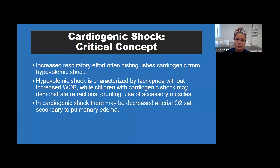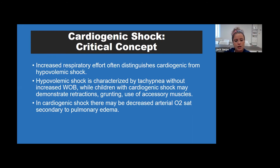A critical concept in cardiogenic shock: increased respiratory effort—retractions, grunting, and accessory muscle use—often distinguishes cardiogenic from hypovolemic shock, which has tachypnea without increased work of breathing. You also need to discern it from respiratory emergencies. Cardiogenic shock will also have a decreased arterial O2 sat because of pulmonary edema.